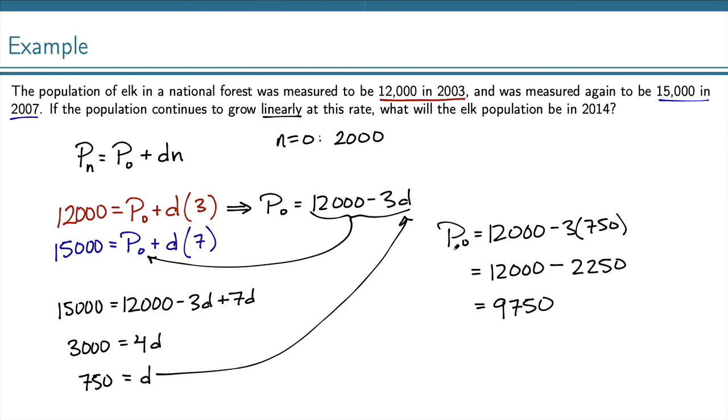Now that I have P0, I can go back and get my explicit formula, P sub n equals P0, which is 9,750, plus D, which is 750, times n.